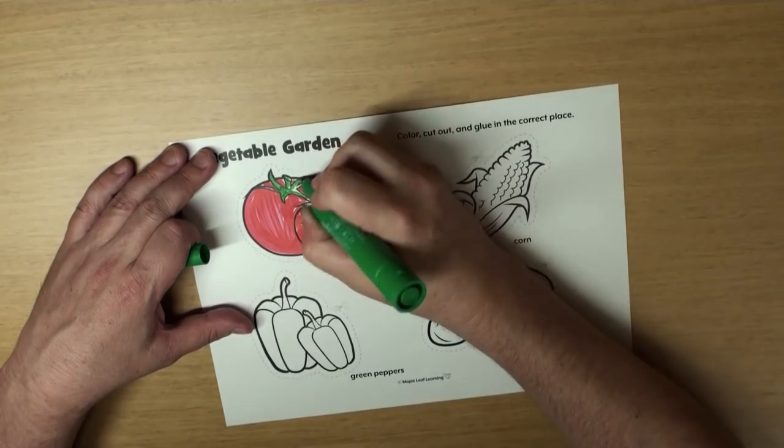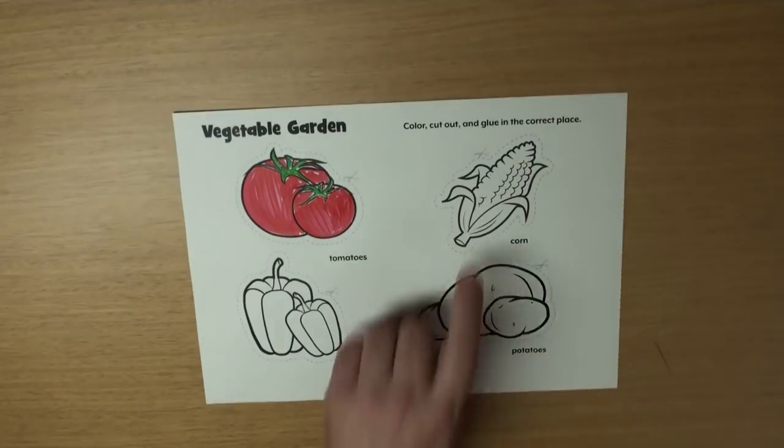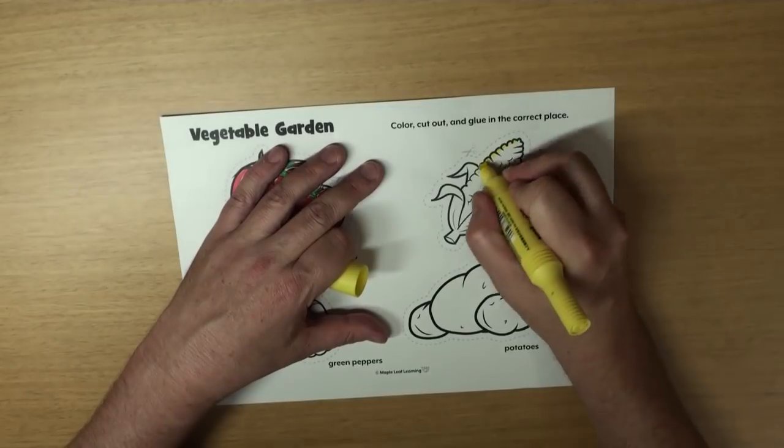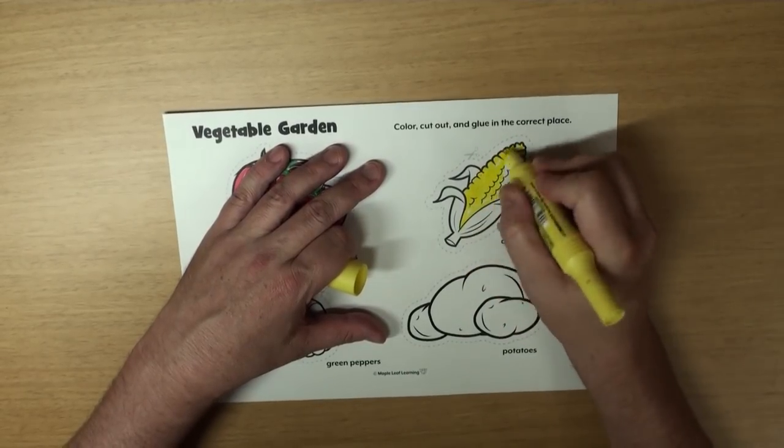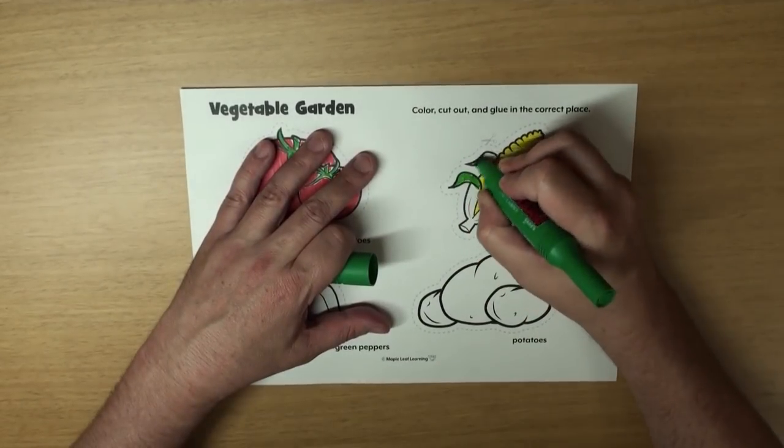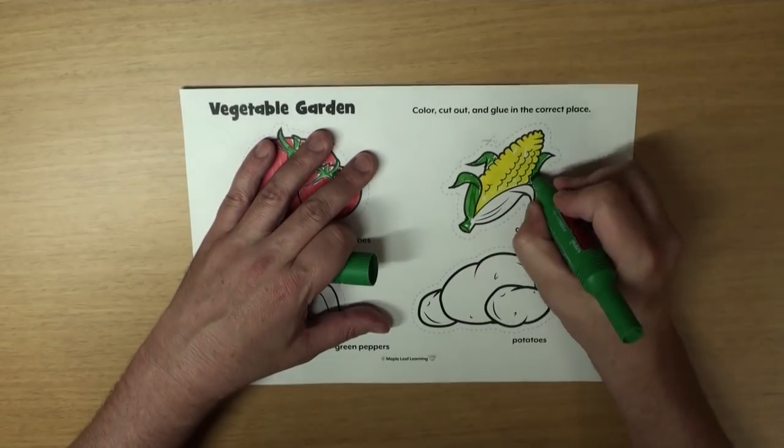Do you like tomatoes? I do. What's next? Yeah, that's right. It's corn. And it's yellow and green. And super yummy.